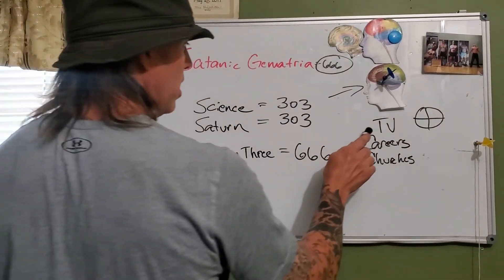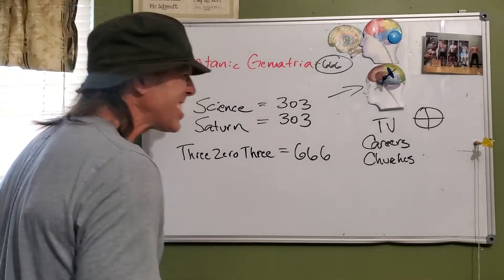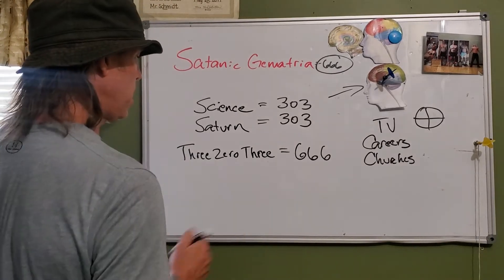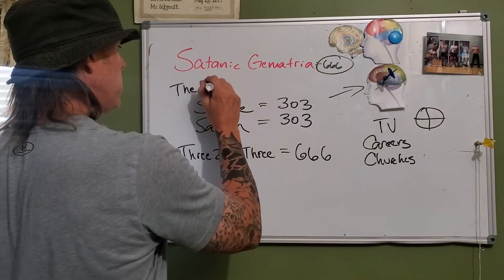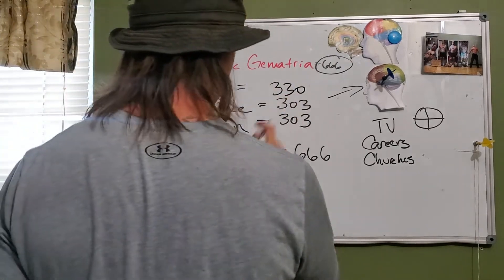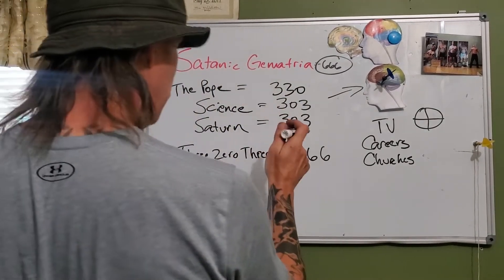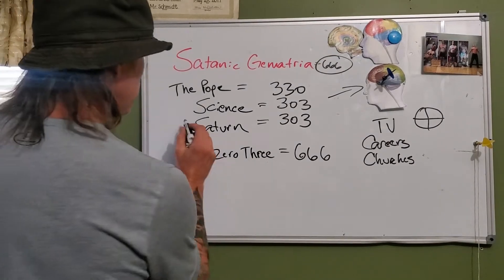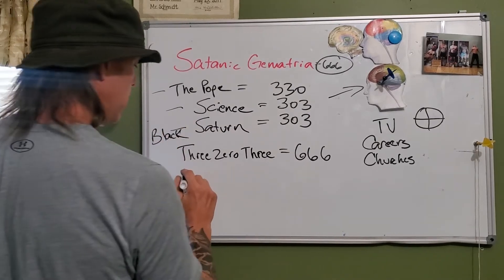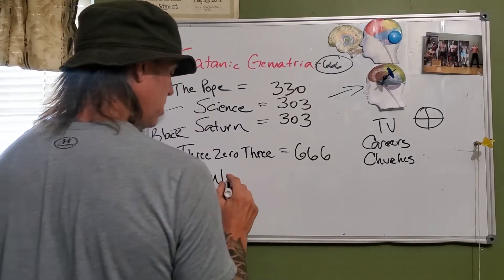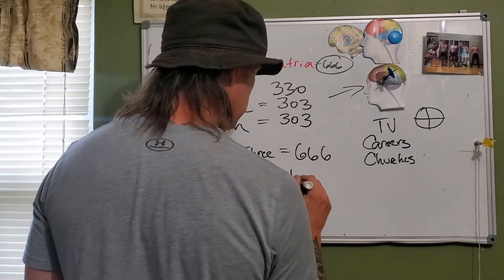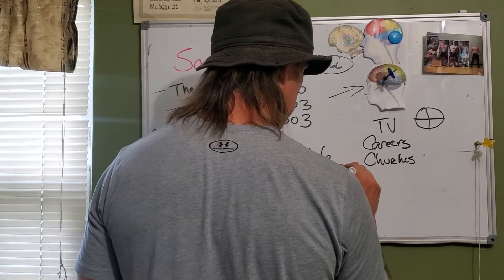Science did that, science did that — and it's Satan. Because even when you key in 'the pope' it comes out around 330, and even that is still 666. Saturn represents the color black — you've got AC/DC with Back in Black, that's Saturn. No Doubt's album Return of Saturn. The square represents Saturn: Times Square, Vatican Square, everything's a square.